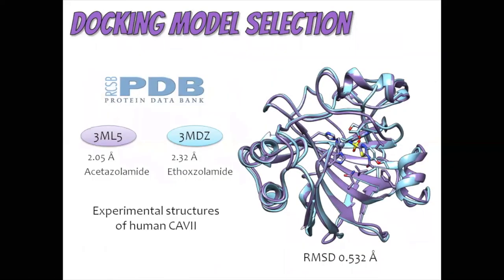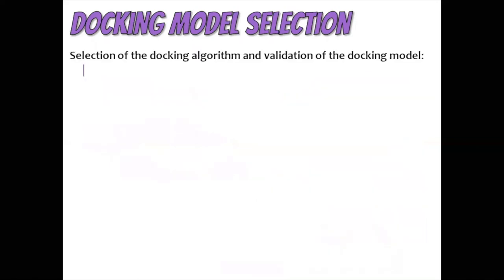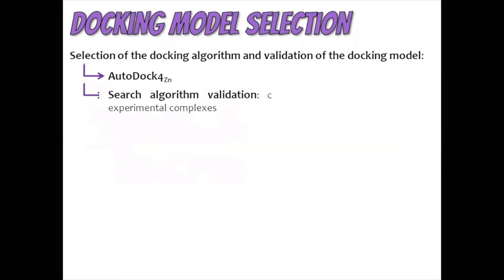To begin, we downloaded the two experimental CA7 structures available at that time from the Protein Data Bank database. Among all the docking algorithms we tested, we selected AutoDock4Zn as the only algorithm that was able to reproduce the experimental pose, demonstrated by redocking and cross-docking.